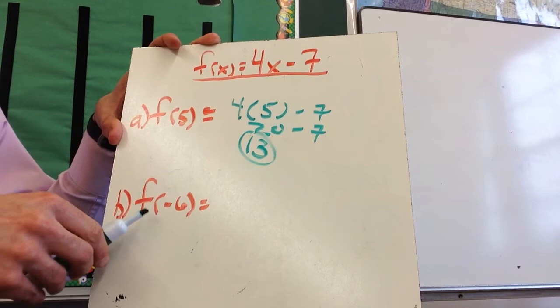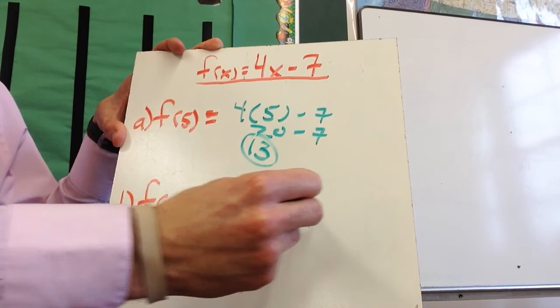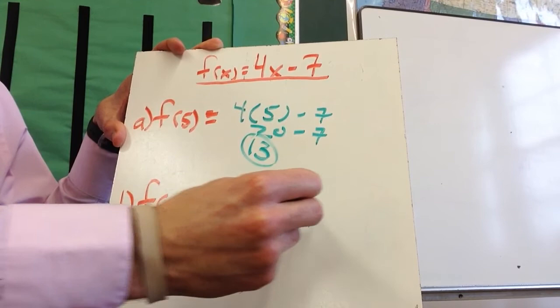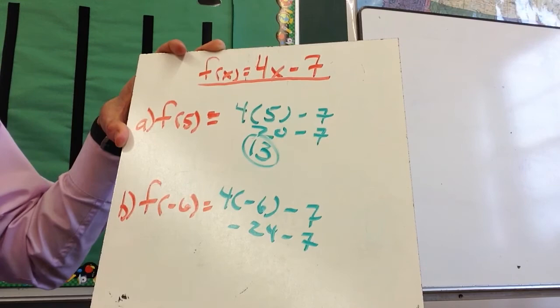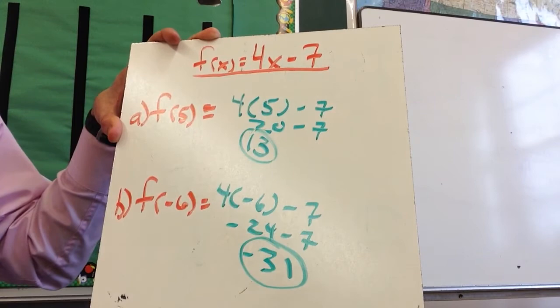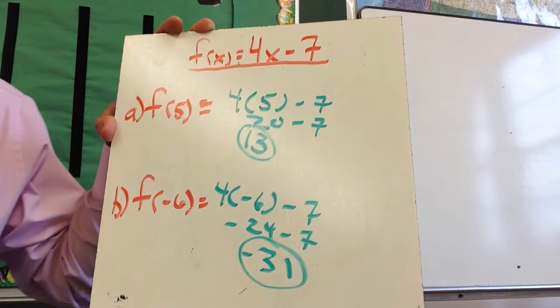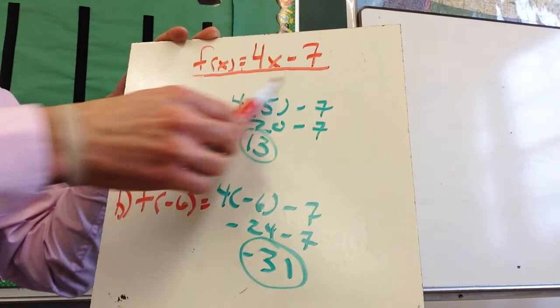And then the second problem, f of negative 6, this is 4 times negative 6 minus 7. This becomes negative 24 minus 7. And when I put these together I should get negative 31. So don't get thrown off by the notation, this just means that I'm substituting in for the x. It's kind of a fancy way of writing it. So often times you get this equation and then you get a bunch of these problems, 4, 5, 6 problems basically related to that same equation.